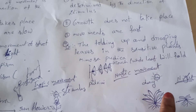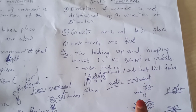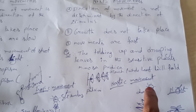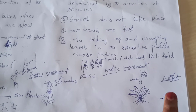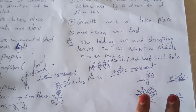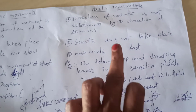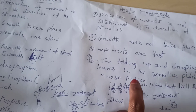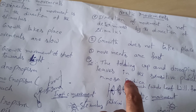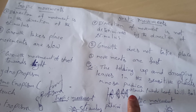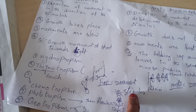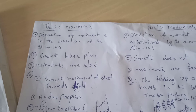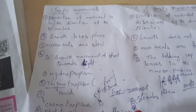Here is another example of Nastic movements — day and night. Some plants during the daytime will be blooming, looking fresh. When night comes, they go into a sleeping mode. When day returns, they will be fresh again. These are called Nastic movements, where the stimulus controls the response.